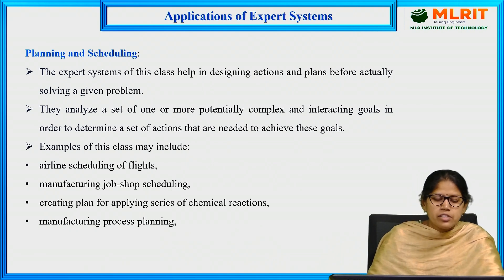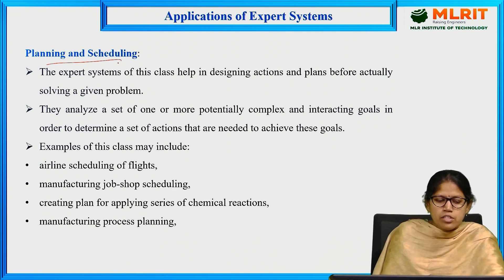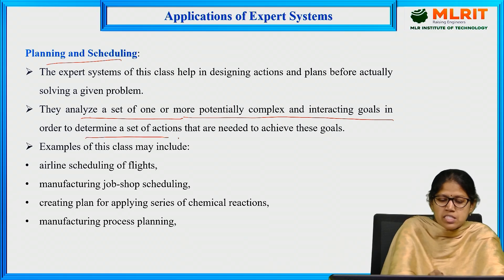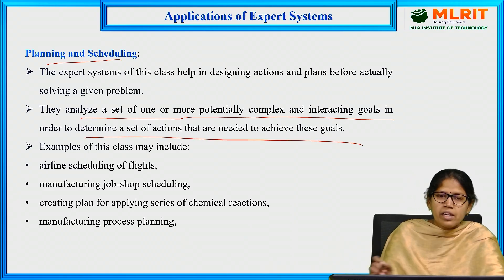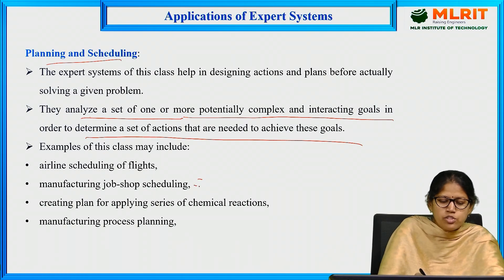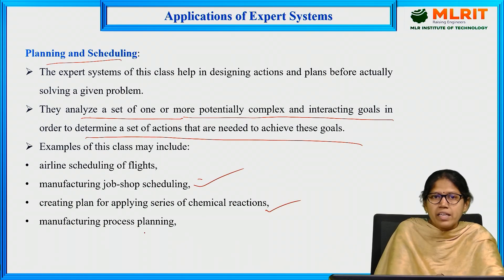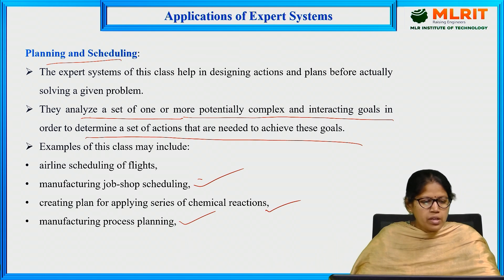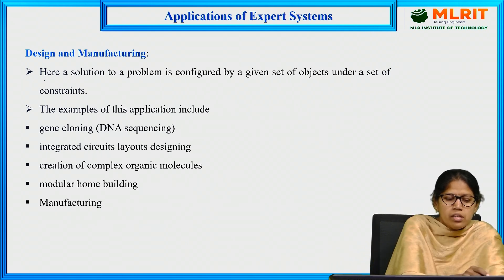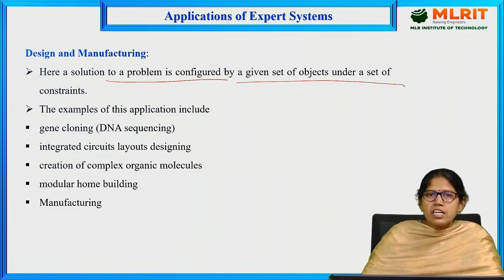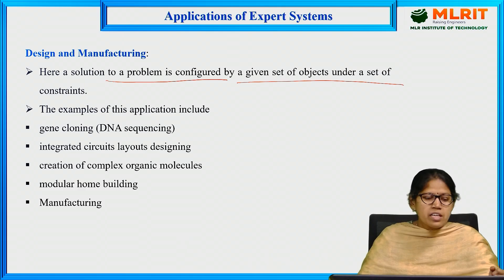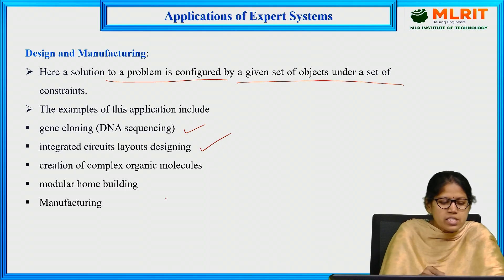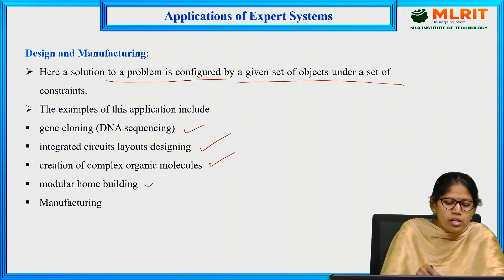The next application is planning and scheduling. Expert systems analyze a set of one or more potentially complex and interacting goals to determine the set of actions needed to achieve them. Examples include airline scheduling of flights, manufacturing job shop scheduling, creating plans for applying a series of chemical reactions, and manufacturing process planning. The next application is design and manufacturing, where a solution is configured from a given set of objects under constraints. Examples include gene cloning, integrated circuit layout designing, creation of complex organic molecules, and modular home building manufacturing.